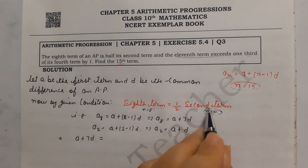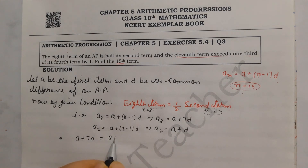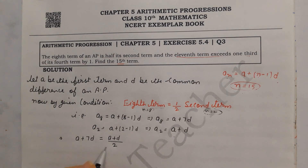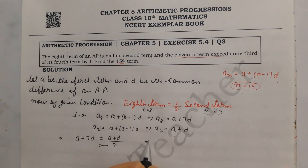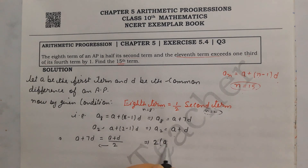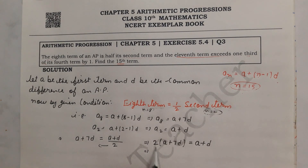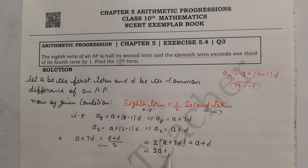Multiplying both sides by 2: 2(a + 7d) = a + d, which gives 2a + 14d = a + d. Rearranging: 2a − a + 14d − d = 0, so a + 13d = 0, which means a = −13d. This is our first equation.